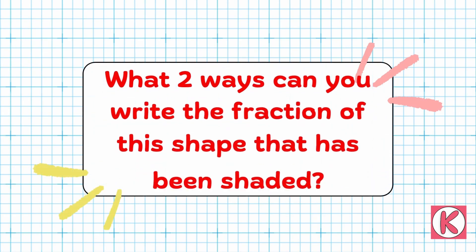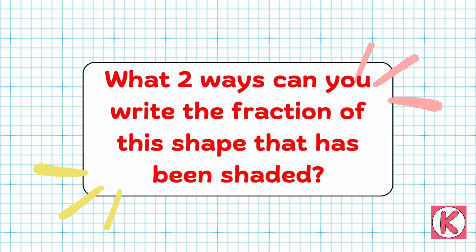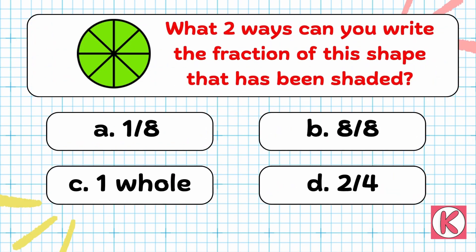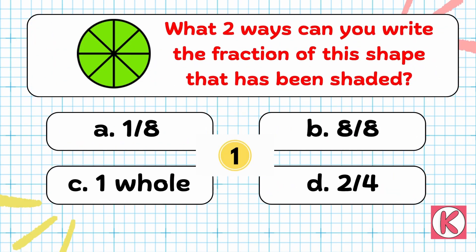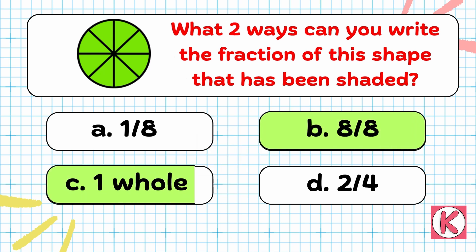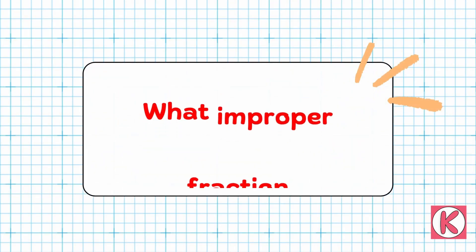Next question. What two ways can you write the fraction of this shape that has been shaded? Correct answer: Option B — 8 by 8 and Option C — 1 whole.